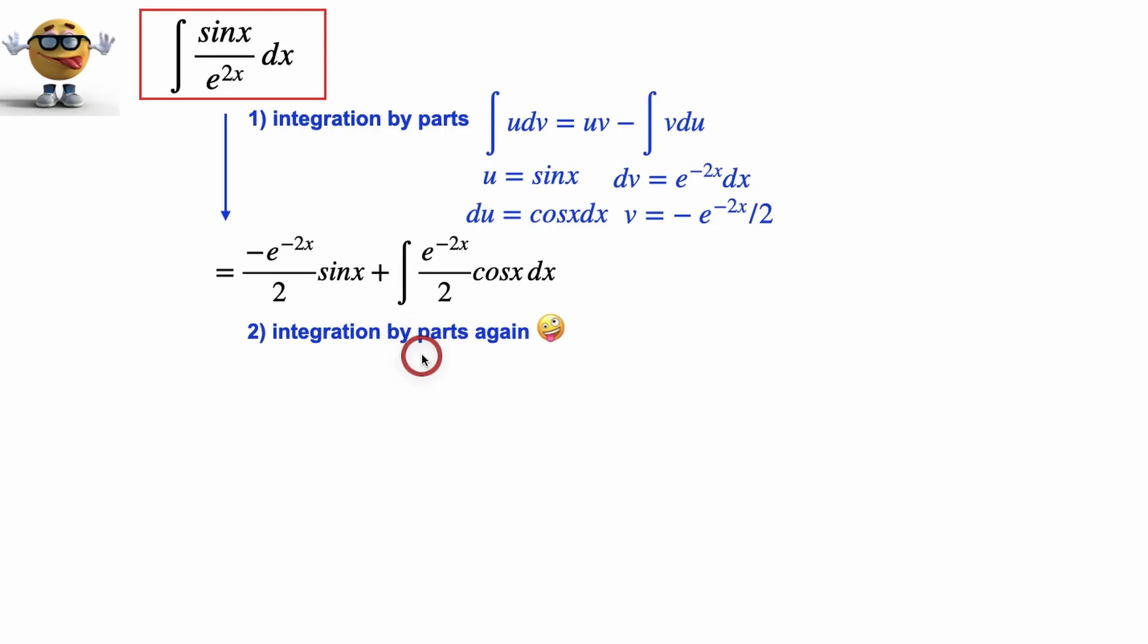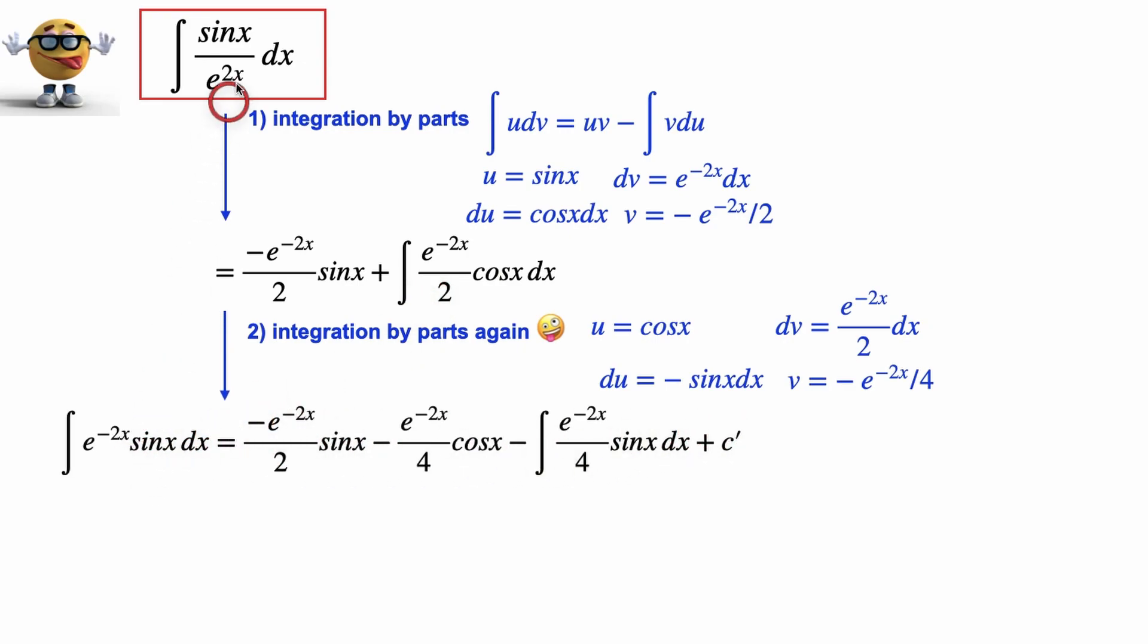We're going to do it in the same way. So we'll set u equal to cos of x, because we have a cos here now, dv is everything else, so e to the negative 2x divided by 2 dx. If we take the derivative, du equals negative sin x dx, and if we integrate, v equals negative e to the negative 2x divided by 4. If we take this and use the integration by parts formula into here, we get this right here, this left-hand side, this is the integral we're trying to evaluate. This term comes along for the ride.